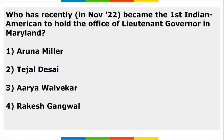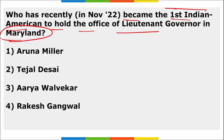Who recently became the first Indian American to hold the office of Lieutenant Governor in Maryland? Aruna Miller is the correct answer. She is an Indian from Andhra Pradesh — she was born in Andhra Pradesh.